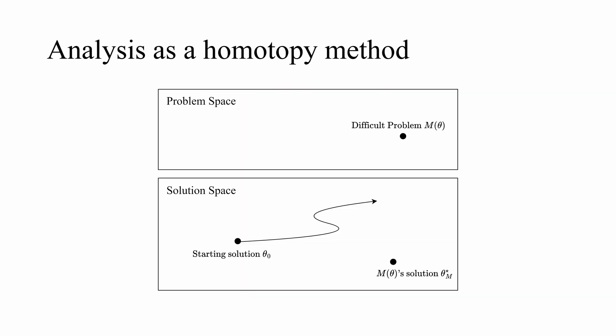We explain our method in the context of homotopy methods, which are a principled way to solve hard problems. Let M of theta be our hard problem. We define an easy problem, N of theta, and a way to deform N of theta into M of theta. By taking small steps along this path and solving the problem at each step given the previous solution, we can reach the solution to the hard problem.